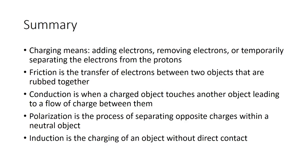Charging means adding electrons, removing electrons, or temporarily separating the electrons from the protons. Friction is a transfer of electrons between two objects that are rubbed together. Conduction is when a charged object touches another object, leading to a flow of charge between them. Friction is really just a type of conduction. Polarization is the process of separating opposite charges within a neutral object — it just separates the charges and doesn't actually lead to a net positive or negative charge in the object.